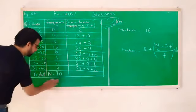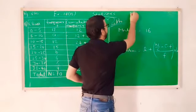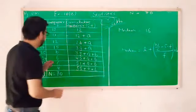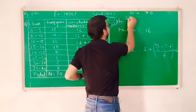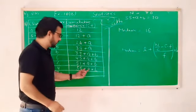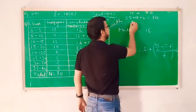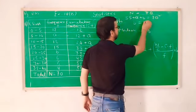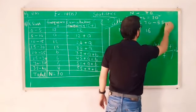Now, we write here. N is how much? 70. And the value of n is sigma f, which is how much? 55 plus a plus b equal to 70. This value we have. Now from this we frame one equation.